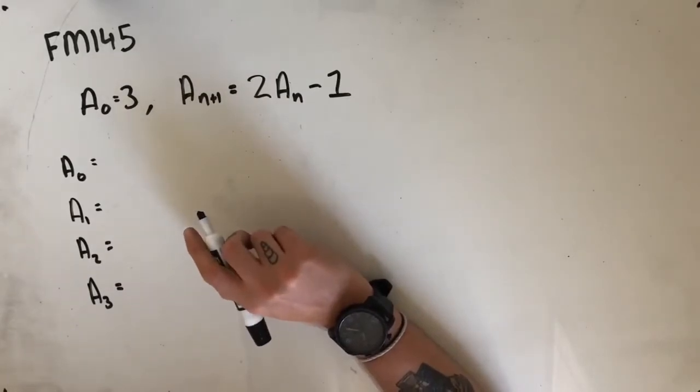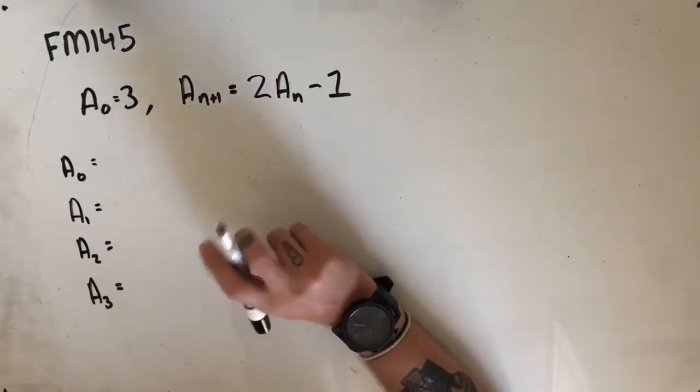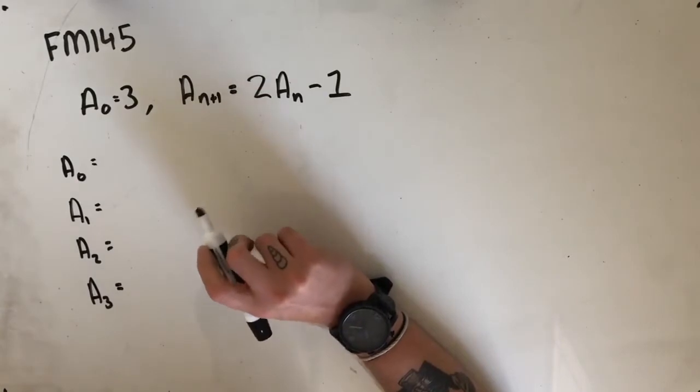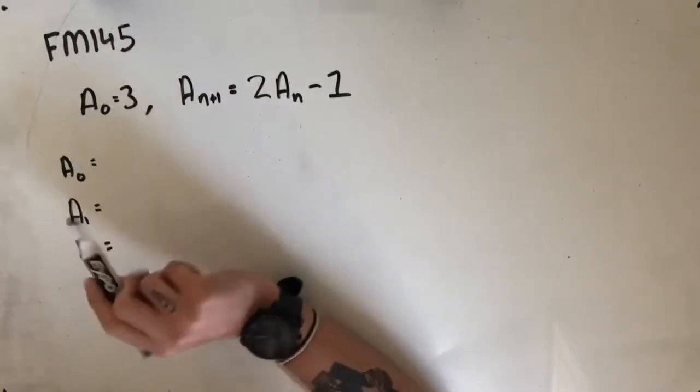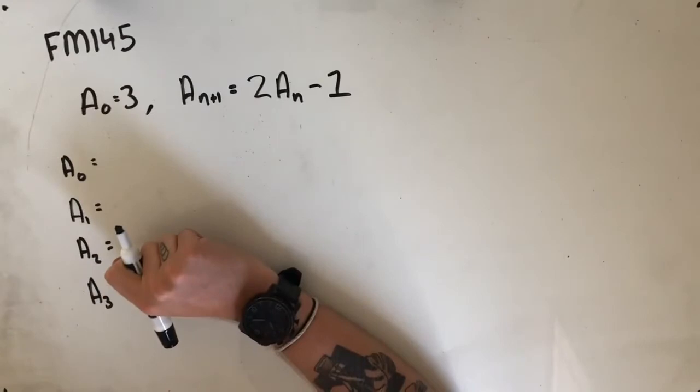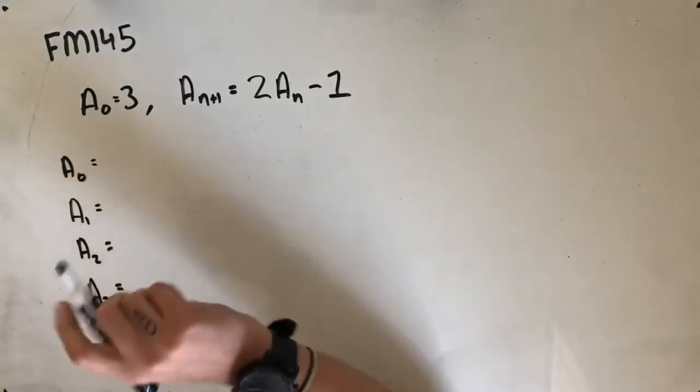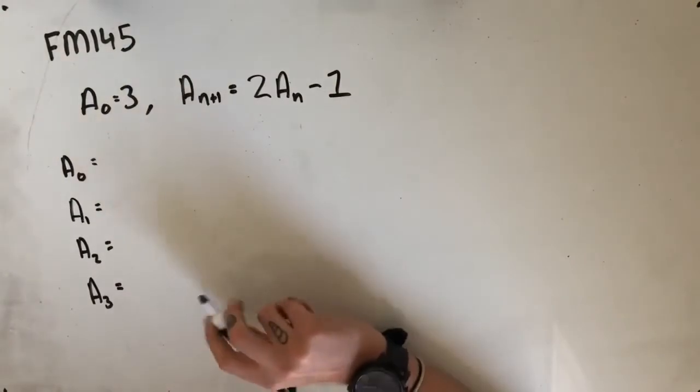Now we can almost immediately rule out options A and B because they both start with numbers that aren't 3, and we're told pretty explicitly that the first term in this sequence is 3. From here, in order to figure out the correct answer, we're going to need to actually go through the recurrence relation and figure out what these values are.